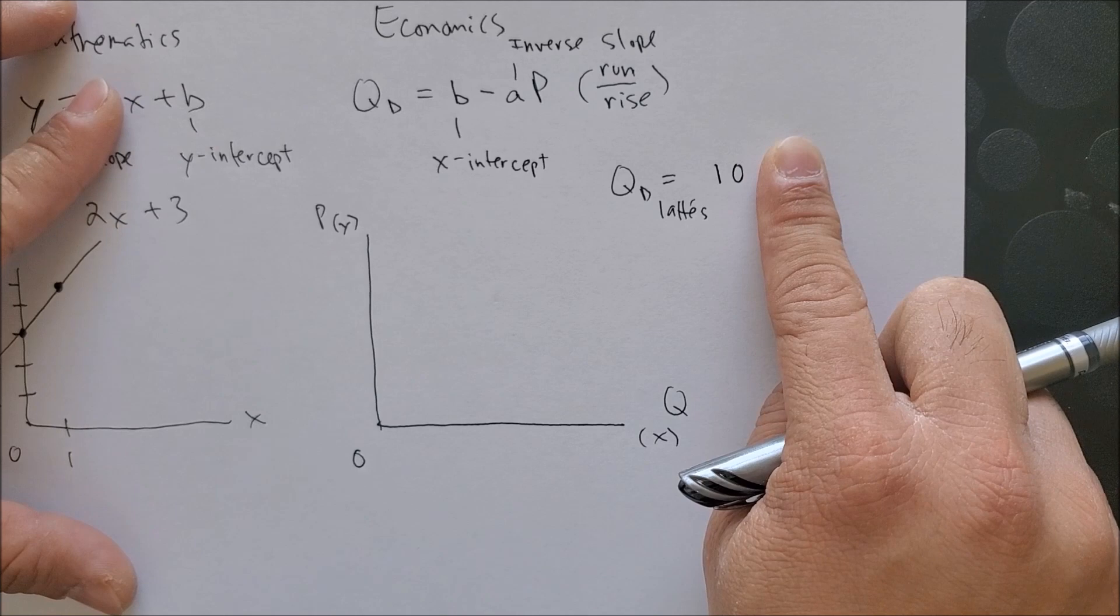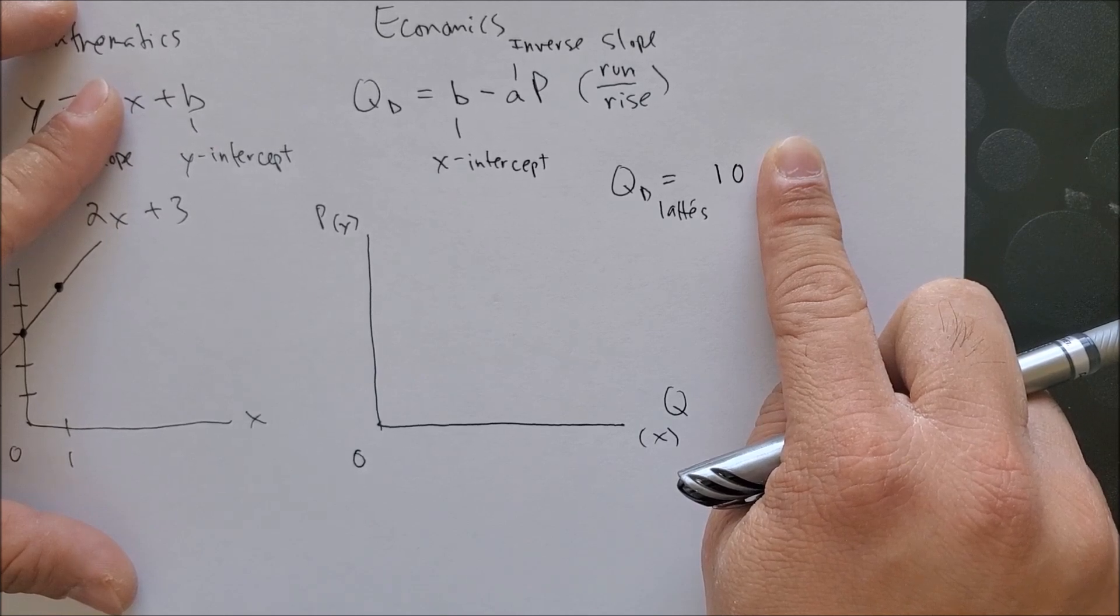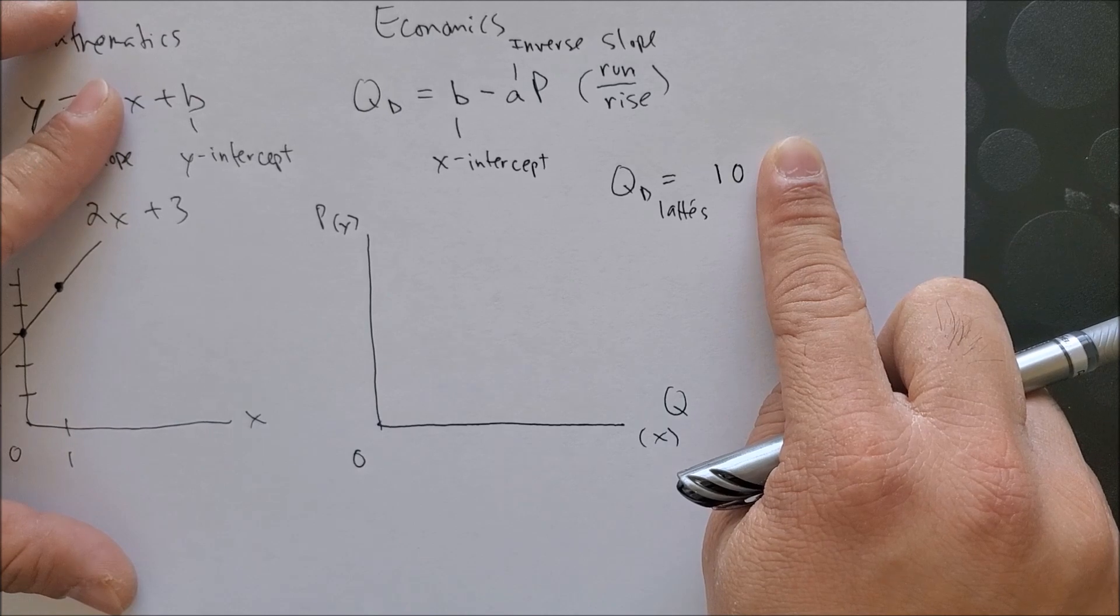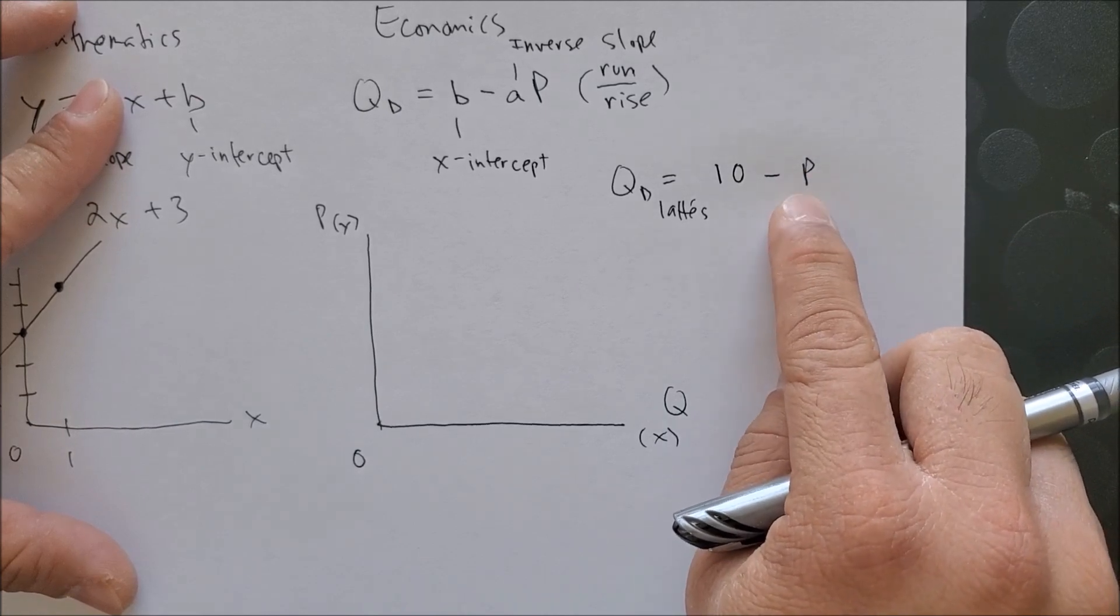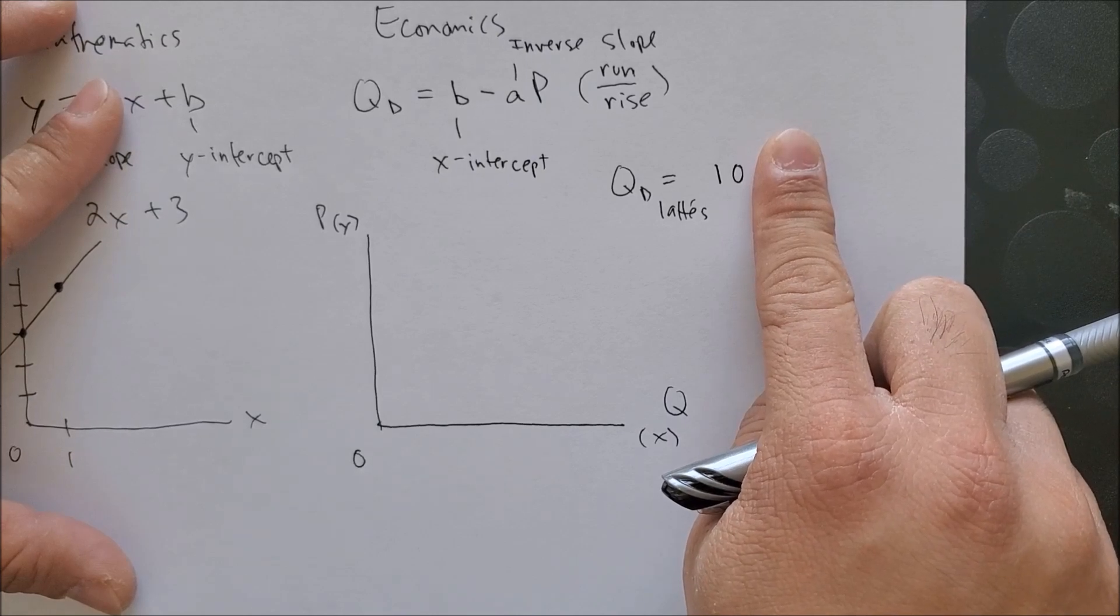For some people, it might be less. It might be one, it might be three, it might be five. But for me, if the price of a latte is zero, it's free, I want 10 lattes.